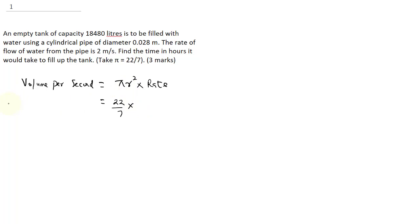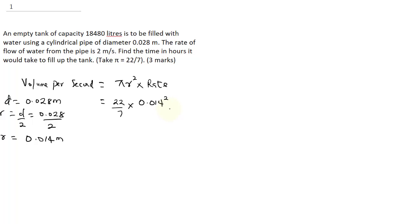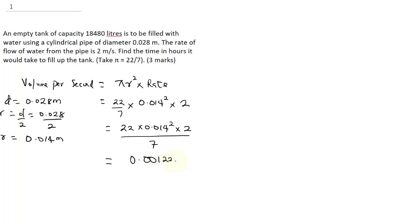The diameter is 0.028 meters, therefore the radius is diameter over 2, which gives 0.028 divided by 2. So the radius is 0.014 meters. So that means: 22 over 7 times 0.014 squared, times the rate of 2. That means 22 times 0.014 squared multiplied by 2, all divided by 7. When you punch this on your calculator, you get 0.001232.